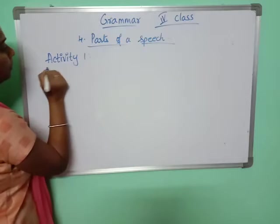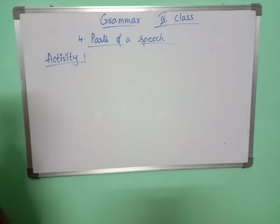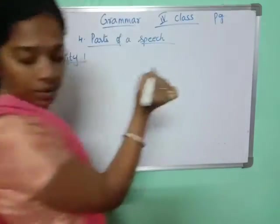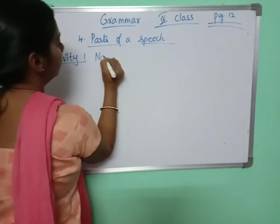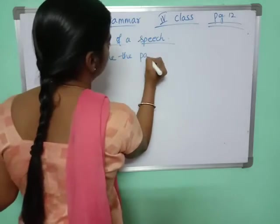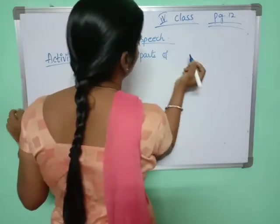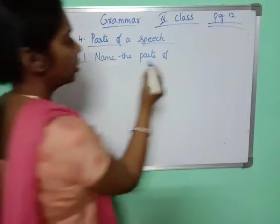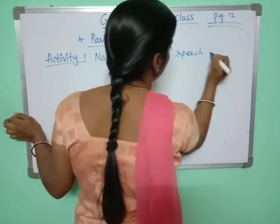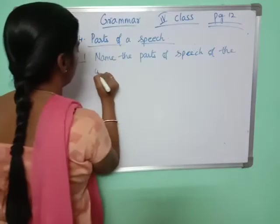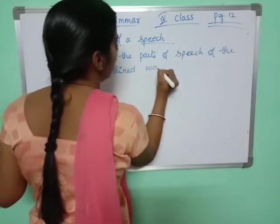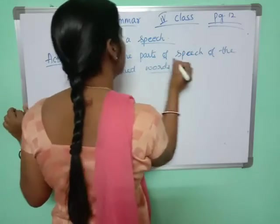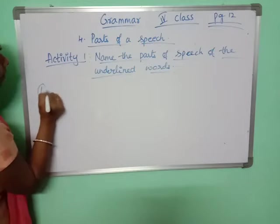Activity 1. Name the parts of speech for the underlined words. Page number is 12. So, name the parts of speech of the underlined words. Some sentences are given and in that some words are underlined. We have to tell what part of speech each underlined word is.